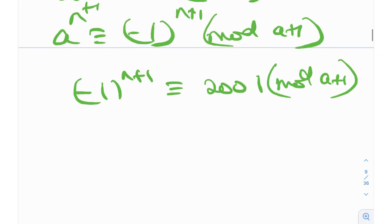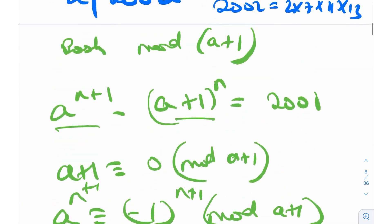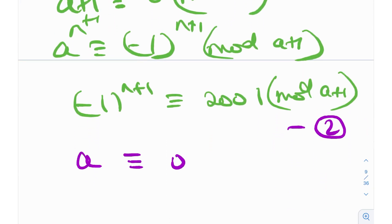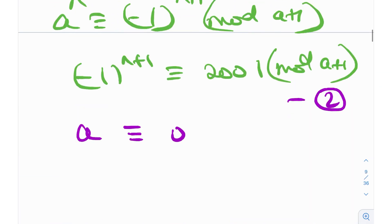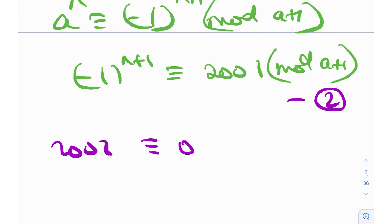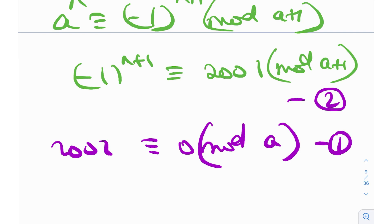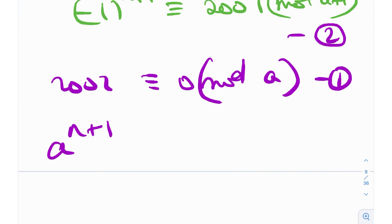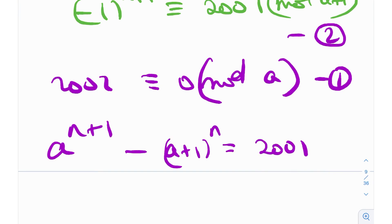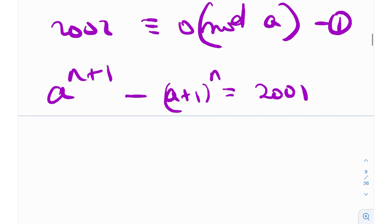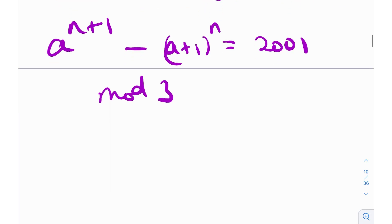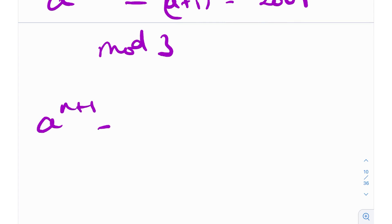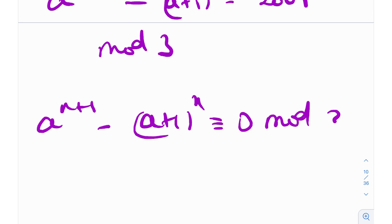So far we have two results: 2002 ≡ 0 mod A (equation 1) and (−1)^(N+1) ≡ 2001 mod (A+1) (equation 2). Now, since 3 is a factor of 2001, let's try mod 3 to make the right-hand side 0. The claim is that A cannot be 0 or −1 mod 3. If A ≡ 0 mod 3, then A^(N+1) ≡ 0, but (A+1)^N ≢ 0, so we can never get 0 mod 3. Similarly, if A ≡ −1 mod 3, then (A+1)^N ≡ 0 but A^(N+1) ≡ (−1)^(N+1) ≡ ±1, never giving 0 mod 3.